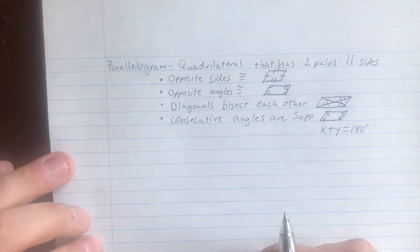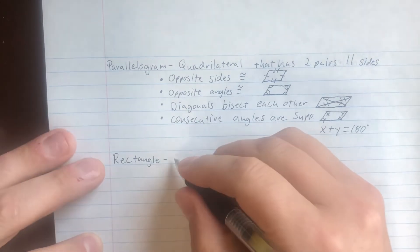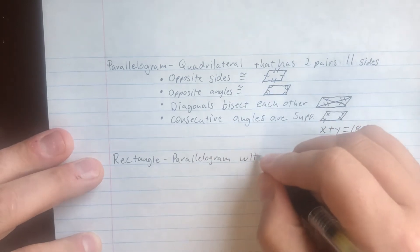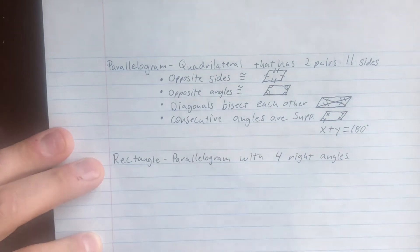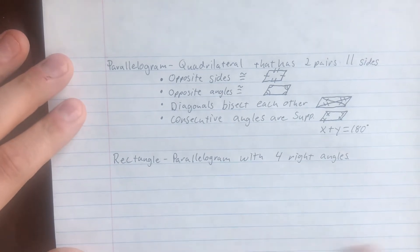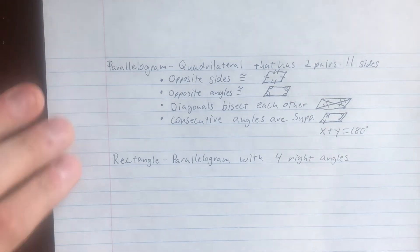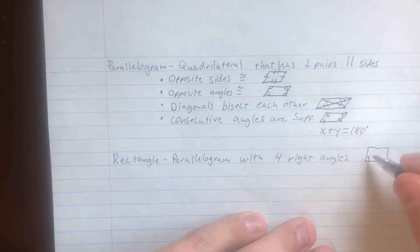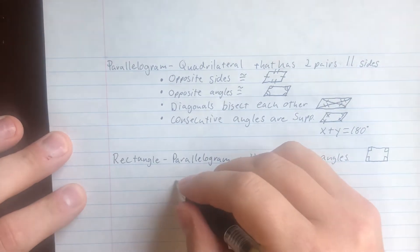From here, we're going to go over our special parallelograms. The first one is a rectangle. A rectangle is a parallelogram with four right angles. Since it's a parallelogram, it has all the characteristics of a parallelogram: opposite sides are congruent, opposite angles are congruent, diagonals bisect each other, and consecutive angles are supplementary. In the diagram, each angle is marked with a box because it's 90 degrees. A special characteristic of a rectangle is that the diagonals are congruent.